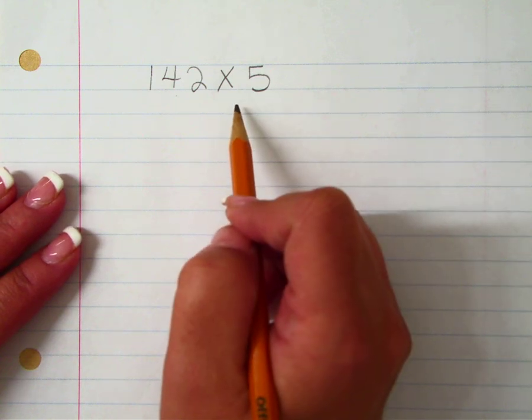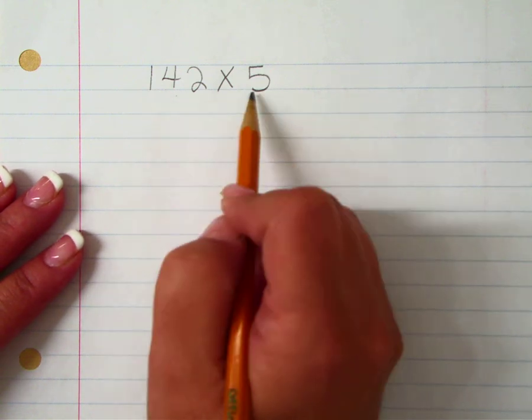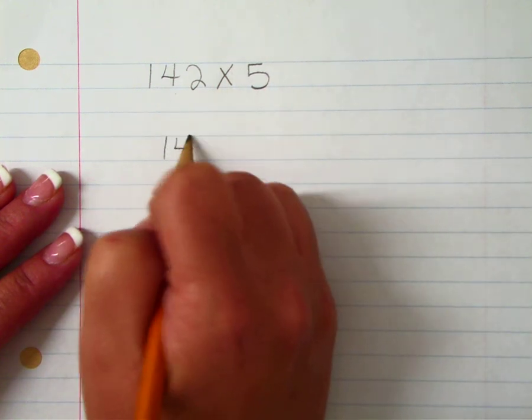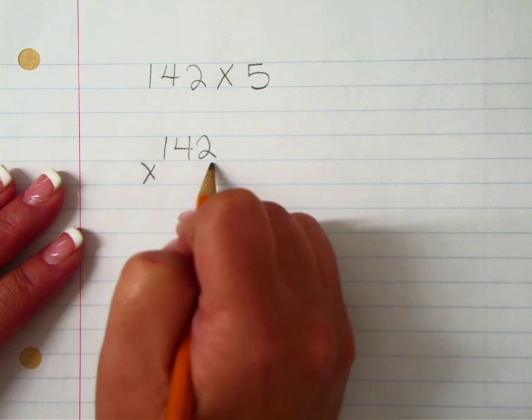So when we use the partial products method, we stack the numbers on top of each other. So we'll write it again, 142 times 5.